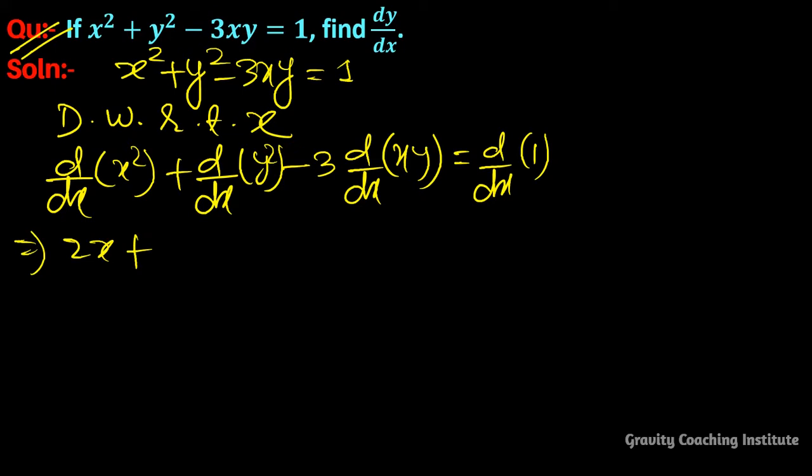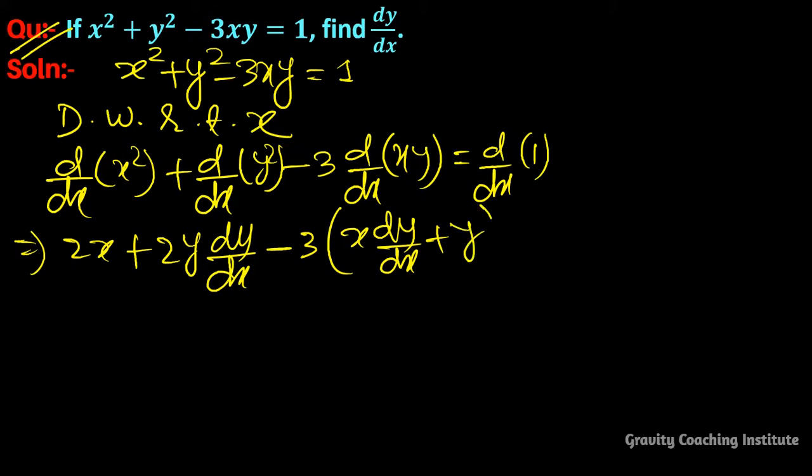x² becomes 2x, and y² becomes 2y dy/dx. And here product rule is used, so x dy/dx plus y times the derivative of x which is 1, equals 0. So this implies that...